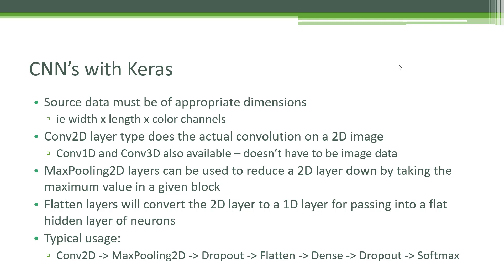Another specialized layer in Keras for CNNs is MaxPooling2D — with 1D and 3D variants as well. The idea is just to reduce the size of your data by taking the maximum value seen in a given block of an image, shrinking it down in a way that reduces processing load on the CNN. Processing CNNs is very compute intensive, so anything you can do to reduce the work is better. Finally, at some point you need to feed data into a flat layer of neurons, so you apply a Flatten layer to convert that 2D layer into 1D so you can pass it into a layer of neurons. From there it just looks like any other multi-layer perceptron — the magic of CNNs happens at the lower level.